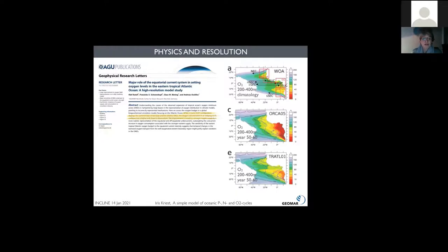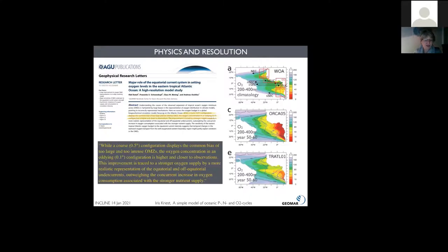This has been shown quite nicely in the paper by Olaf Duteil, which tested the same model that I've shown you here on a 0.5 degree Orca grid for the Atlantic and on a one tenth of a degree grid for the Atlantic and compared this to observations. This is always oxygen between 200 and 400 meters from year 50 to year 60 of the simulation. Indeed, they find that increasing the resolution looks much better in comparison to observations than when using a coarse grid. So they concluded that really eddying and fine spatial resolutions are needed in order to get the oxygen supply in particular to the shadow zones right.